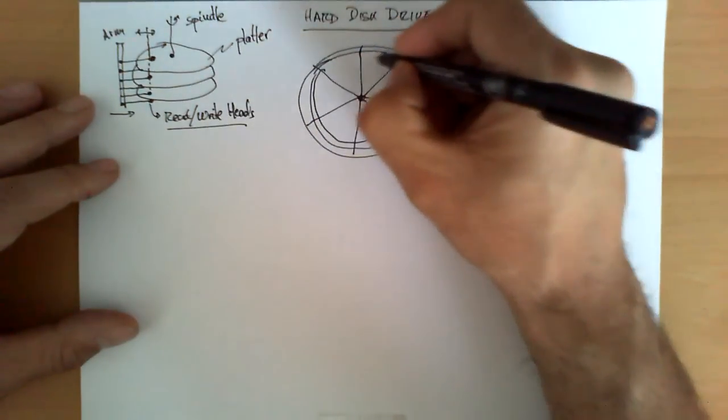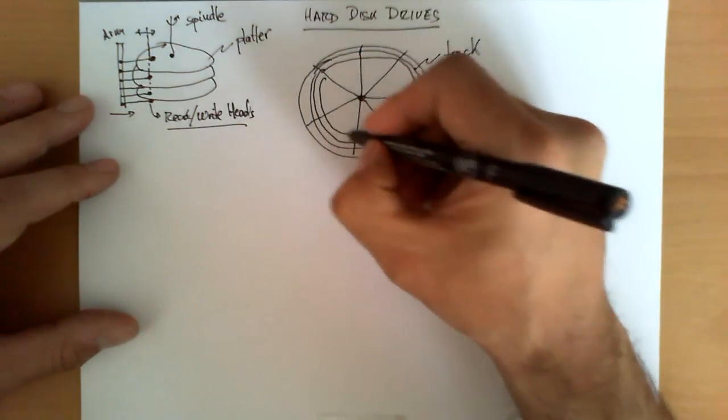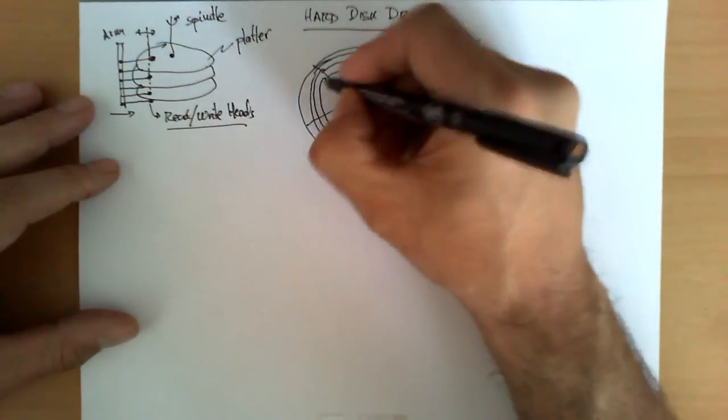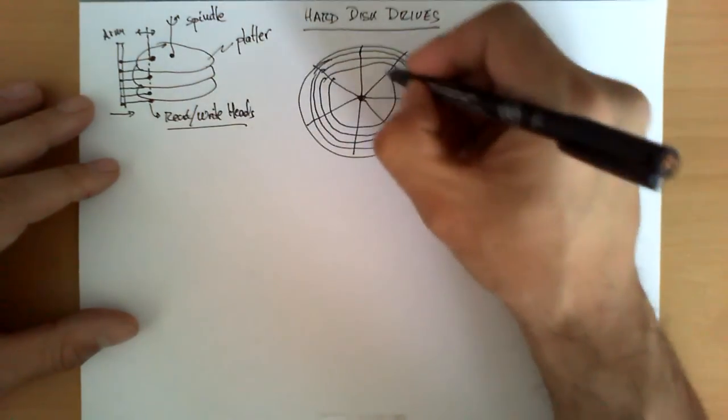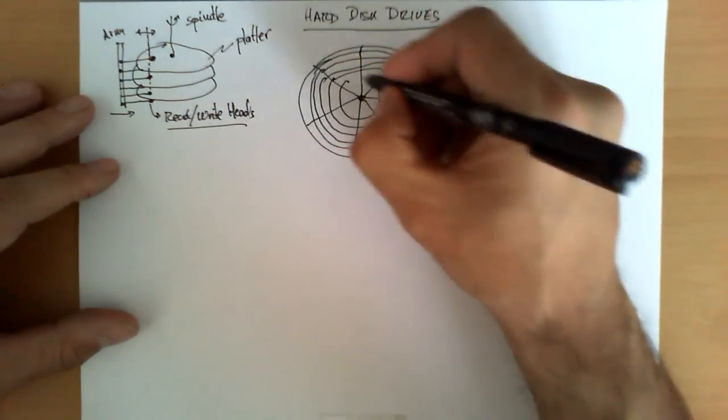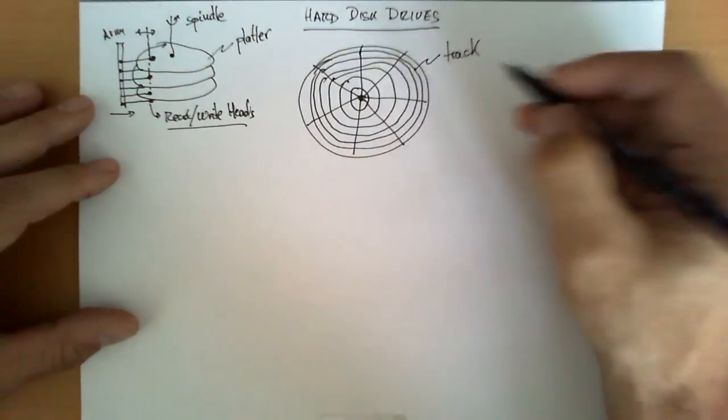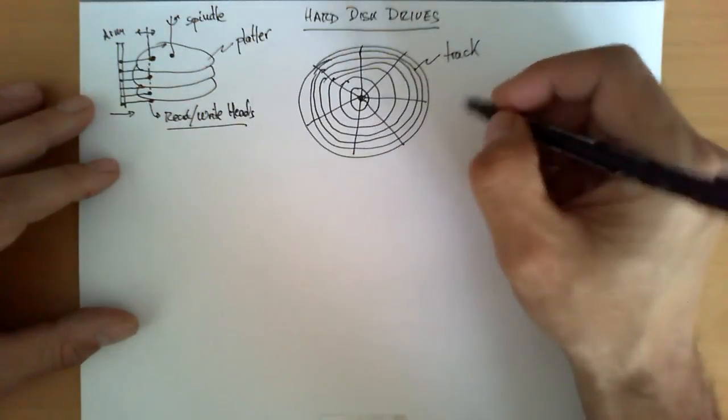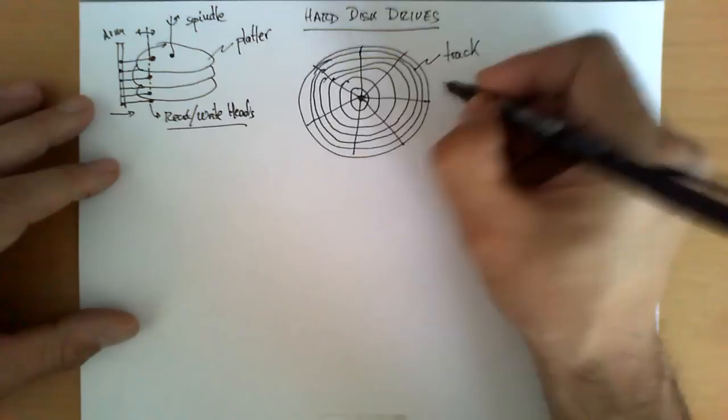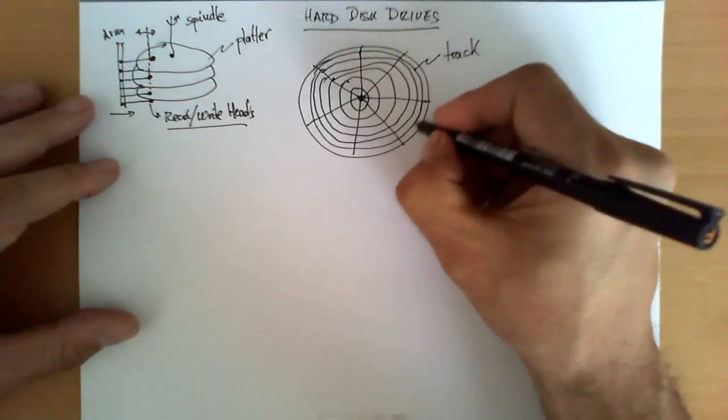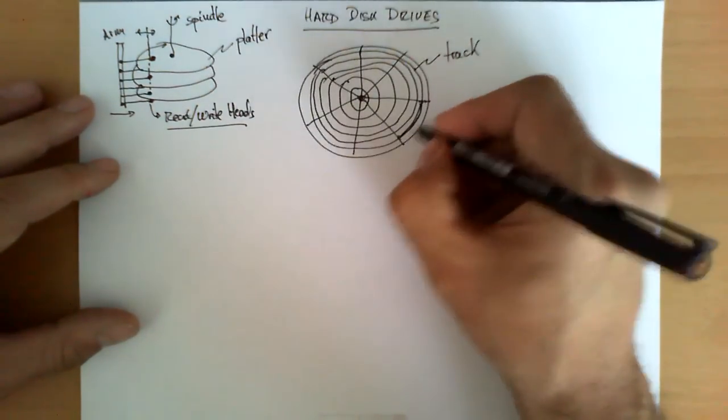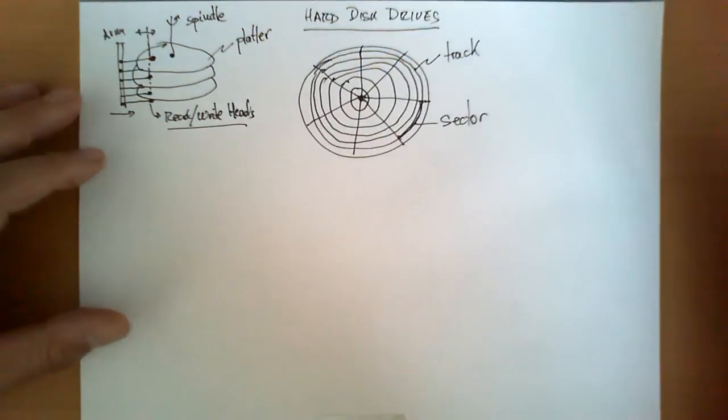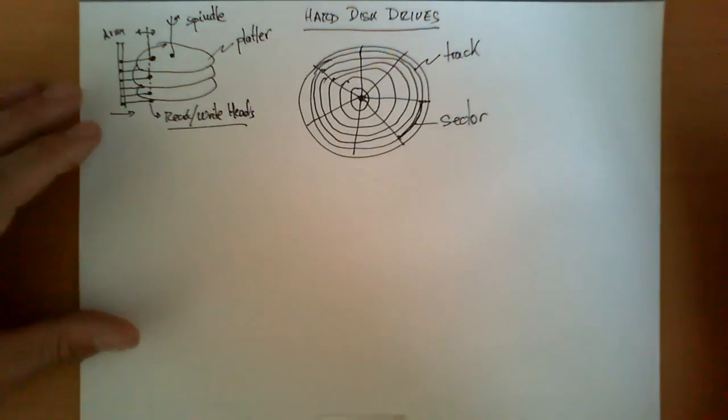And again, it's another parameter that varies from manufacturer to manufacturer, but each platter has a certain number of tracks per surface, and all of them are concentric. Now the division in these areas produces that each track is divided into an area like this, which is called a sector. And in the sector is where we find the data stored.